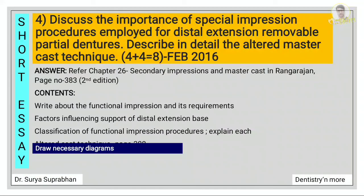Discuss the importance of special impression procedures employed for distal extension RPD. Describe in detail the altered master cast technique. For this refer chapter 26, secondary impressions and master cast, page number 383. First write about functional impression and its requirements, then mention the factors influencing the support of distal extension base, then write the classification of functional impression procedure — physiologic and selective pressure impression techniques — and explain each. For the second part, write about the altered master cast technique and draw the necessary diagrams.